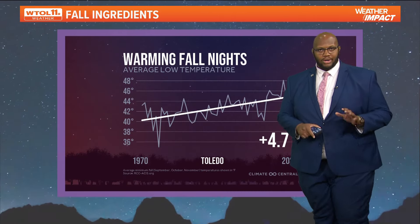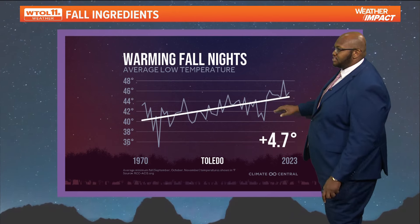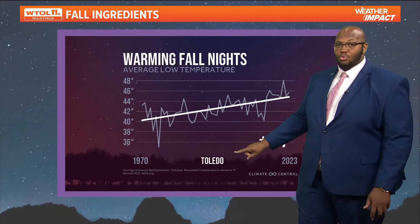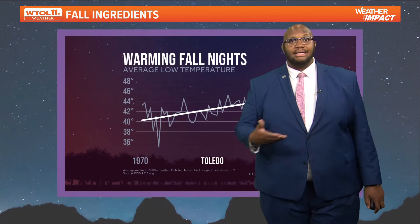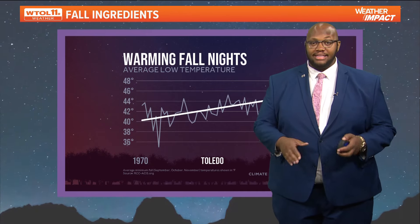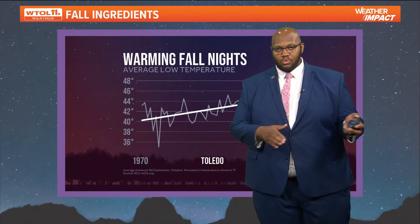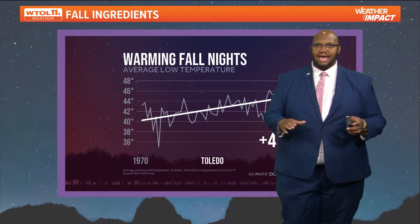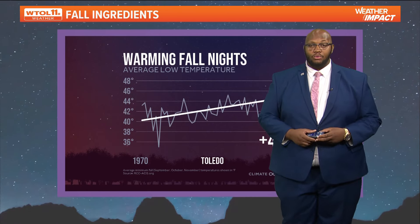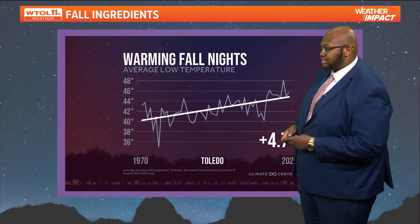We're seeing warmer fall nights — about a four-degree increase throughout Toledo — meaning fewer freezes, which pushes the average first frost later into the season. Typically we see the average first frost around October 4th, but this year we saw it around October 15th or 16th.